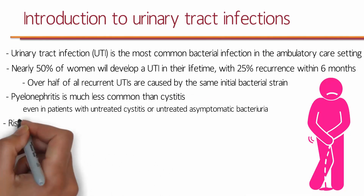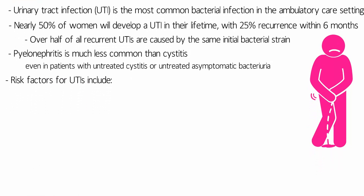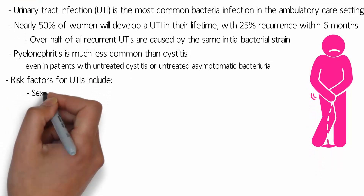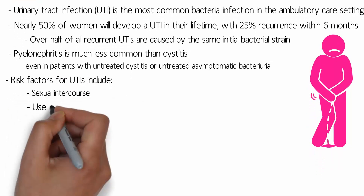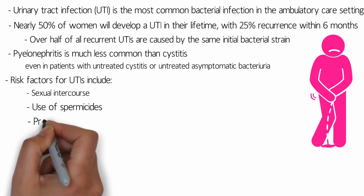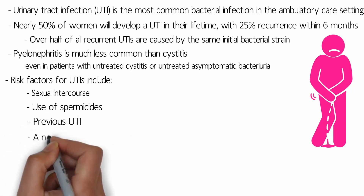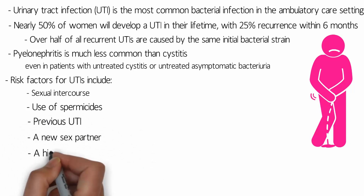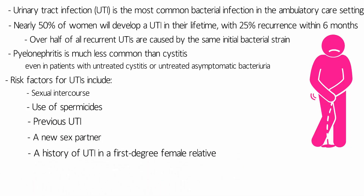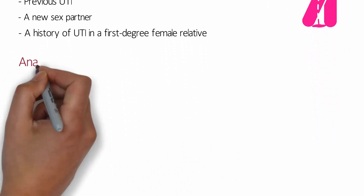Risk factors for UTIs include sexual intercourse, use of spermicides, previous UTI, a new sex partner, and a history of UTI in a first-degree female relative, because there are some genetic components to it.